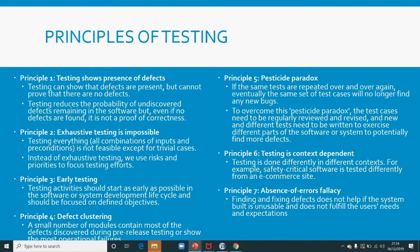Principle number two: exhaustive testing is impossible. It could be possible in trivial cases — if you are testing some small application — but in most complex applications, you cannot say you have exhaustively tested the application and covered everything. Sometimes it's not possible because of the combinations of inputs and preconditions. So if you cannot say you've covered all test cases, what do you do?